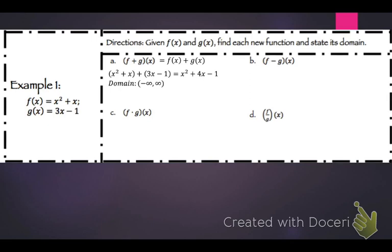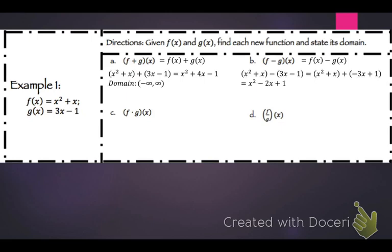If we're subtracting, so we have f of x minus g of x, we have x squared plus x minus 3x minus 1. Distributing that negative sign gives negative 3x plus 1, so you get x squared minus 2x plus 1. The domain is negative infinity to positive infinity.